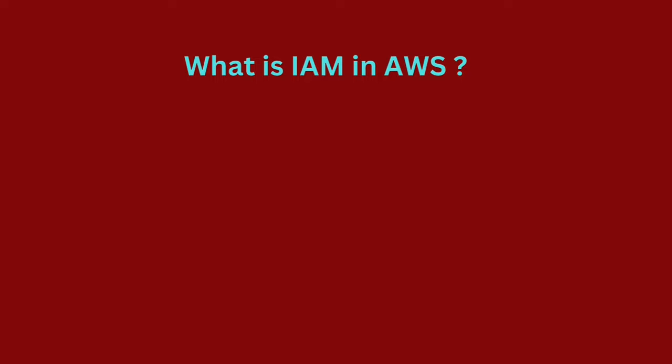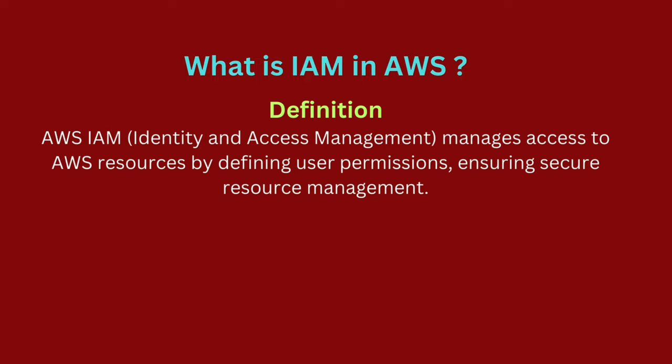AWS IAM, which stands for Identity and Access Management, is a service that controls access to AWS resources by managing user permissions. It allows you to create and manage users, groups, and roles, specifying what actions they can perform within your AWS environment.